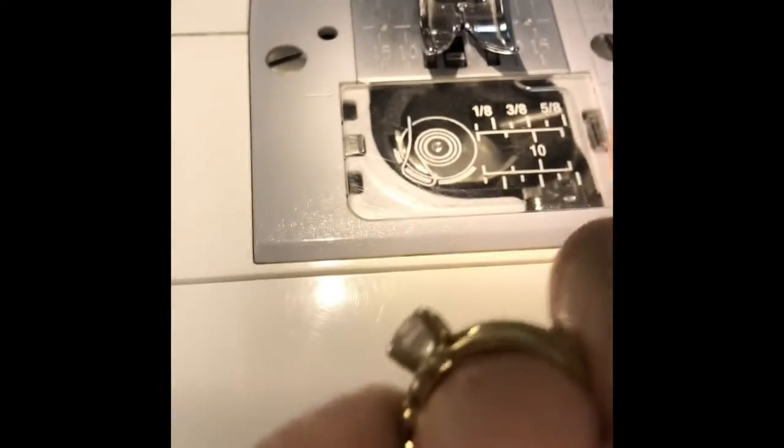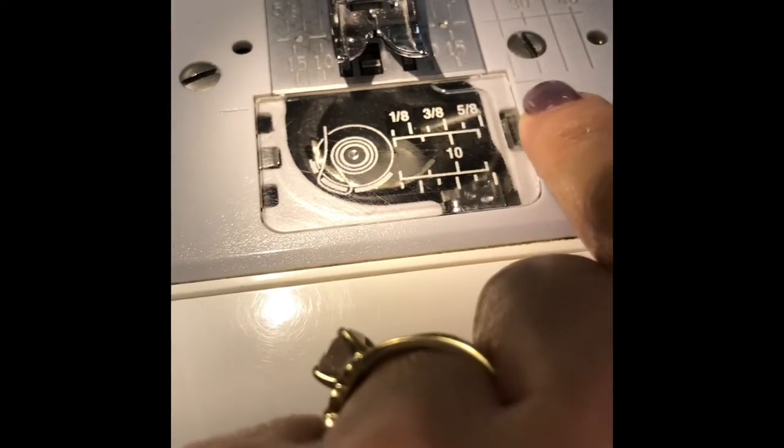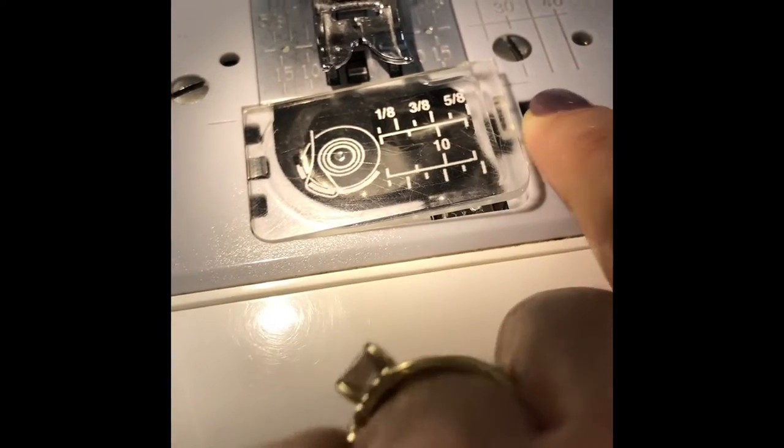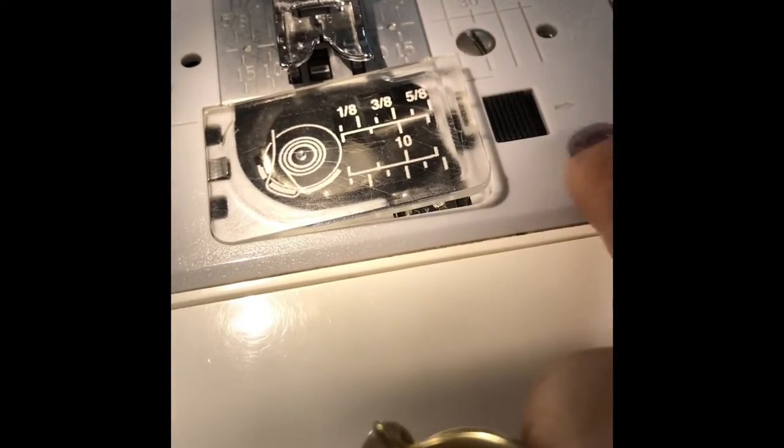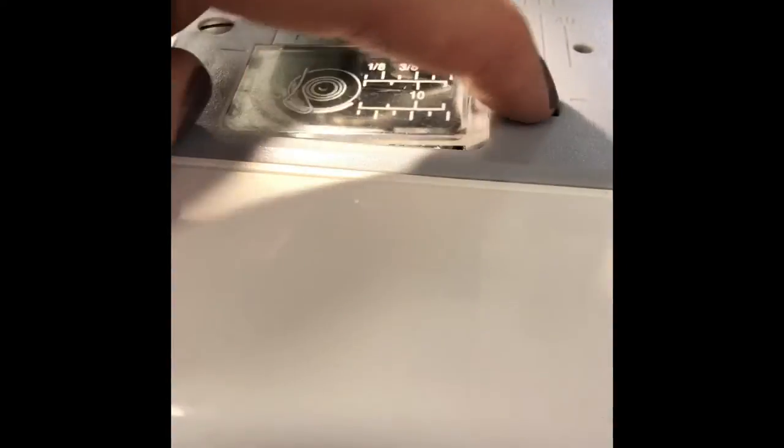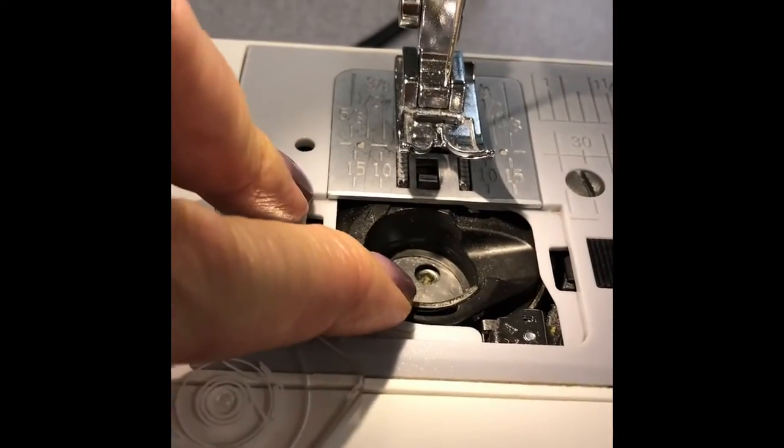In order to get a bobbin inside of this, you have to take the bobbin cover off. On most of these machines, if you just push through the arrow, this little thing pops up and you can take it off, then place the bobbin right there.